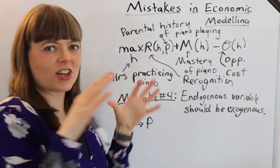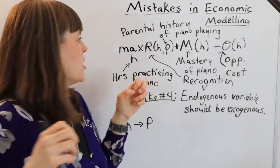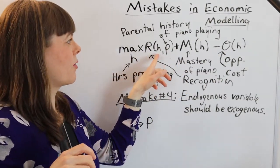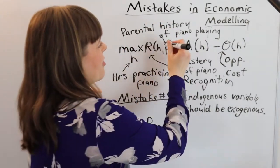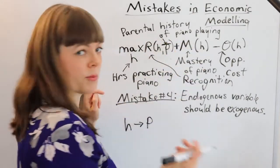And it's that recognition that the kid craves, which increases when they play the piano. And of course, this function, the shape of that function is going to depend on the parent's history. So that's an exogenous variable.